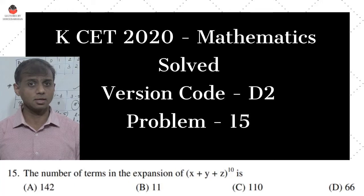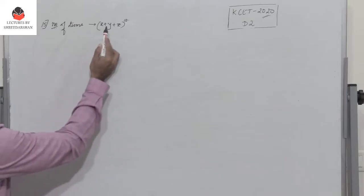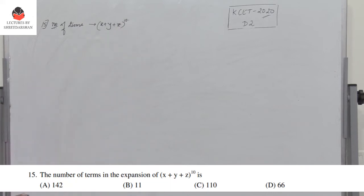So here, problem 15, we need to find the number of terms in the expansion (x + y + z)^10. There are four options given, which you can see on the screen.